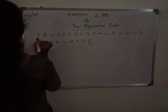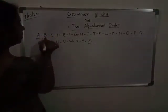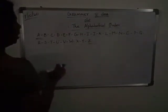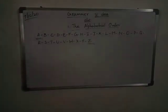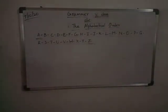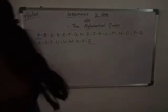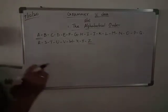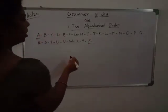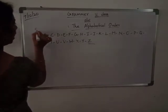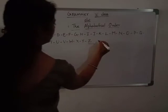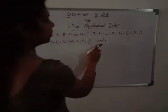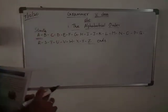That is, first we start with A, then comes B, then comes C, like this. This is the order in which we write the alphabets. It always starts with A and ends with Z. This order is known as alphabetical order.